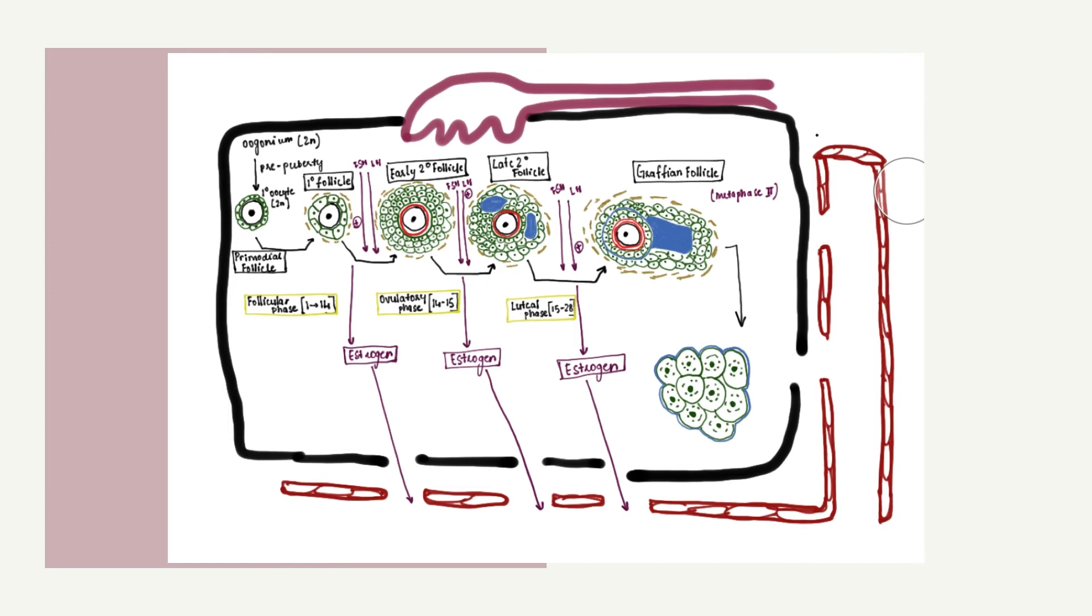The second division then starts and a Graafian follicle is formed. This contains a secondary oocyte. This second division is not completed unless the ovum is fertilized.